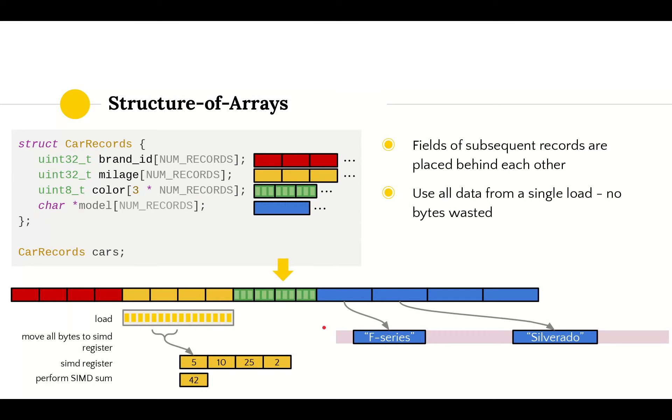Let's take a look at a better approach within our context. Rather than creating an array of structures, we can create a structure where each field is an array holding consecutive values of corresponding fields. This method is called structure of arrays. Rather than storing first the brand ID, then mileage, then color, we first consecutively store all brand IDs, then all mileages and so forth. When we load the first mileage value, we get the second, third and fourth one in our cache as well for free, because that's how computers work—they load the whole cache line.